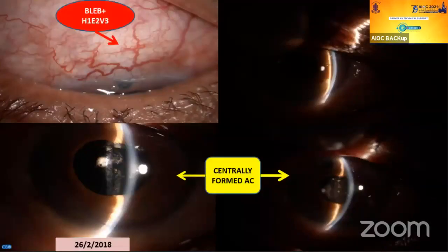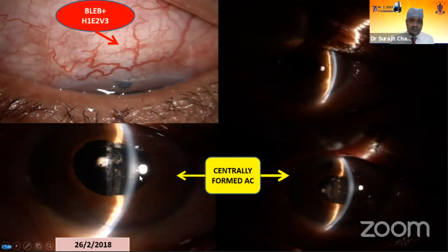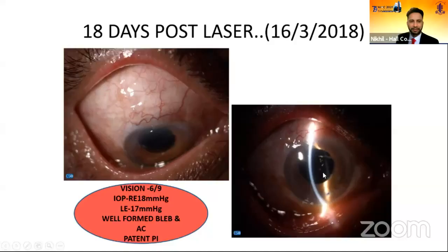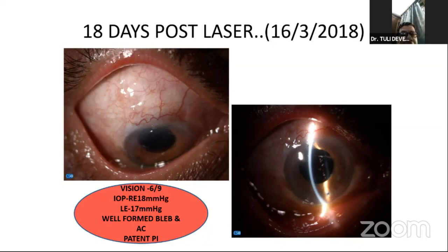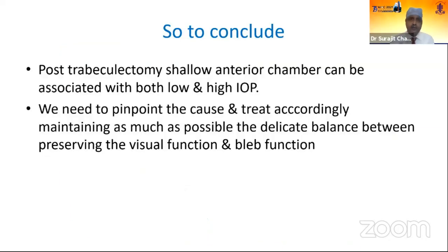Pupillary block can be easily resolved with a PI. To conclude, post-trabeculectomy shallow anterior chamber can be associated with both low and high IOP, and we need to pinpoint the cause and treat accordingly, maintaining as much as possible the delicate balance between preserving the visual function and the bleb function. Thank you.